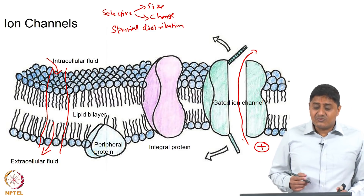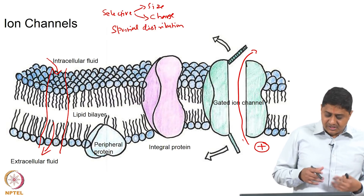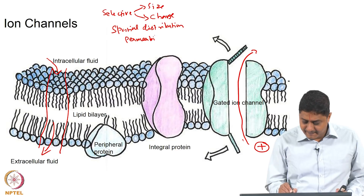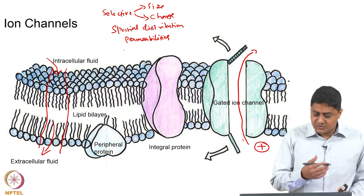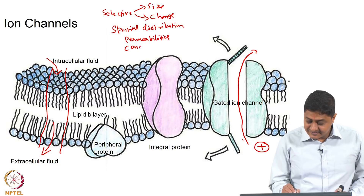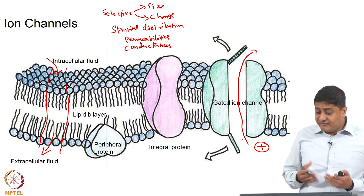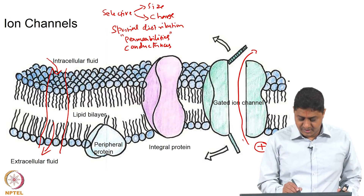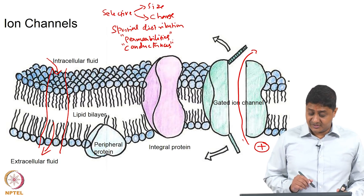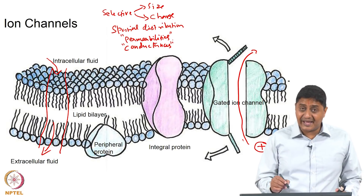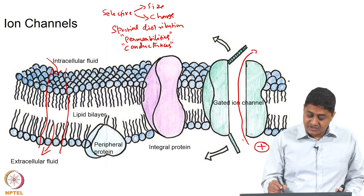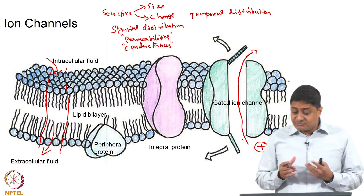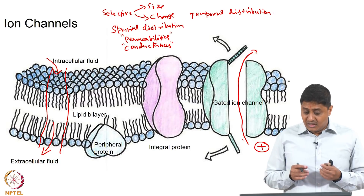The probability that a channel is open governs to a large extent whether that ion will get transported or not. This probability is usually represented in terms of permeabilities, or to use a term from physics and electrical engineering, conductances. If the probability that the channel is open is very high, then the channel has high permeability for an ion, or high conductance for transport of that ion. Also note that this probability is a function of time — it may be open at certain times but not at other times, so there is a temporal distribution of the opening and closing of these channels.